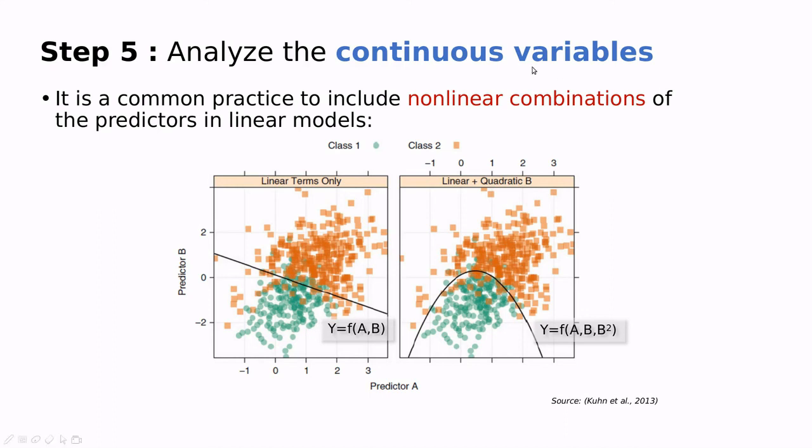Another thing you can do to improve the quality of the fitting is instead of using the features alone, like feature A and feature B, and try to classify according to them, you can add a new feature that you have created from scratch, that is the same feature as before, but for instance, to the square. In this case, we're going to have a nonlinear combination of features. In many cases, you're going to improve the quality of your classification.